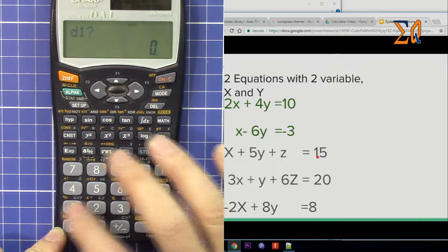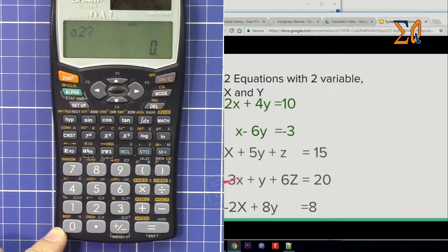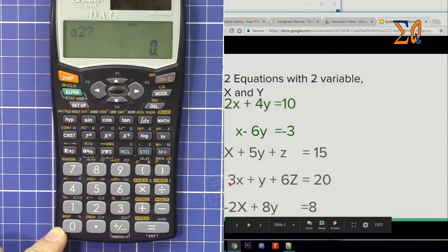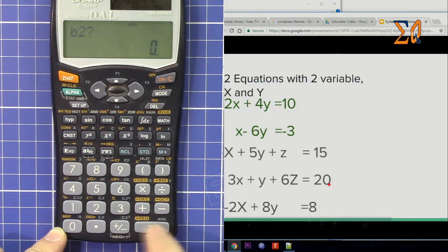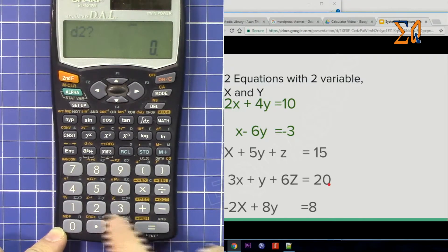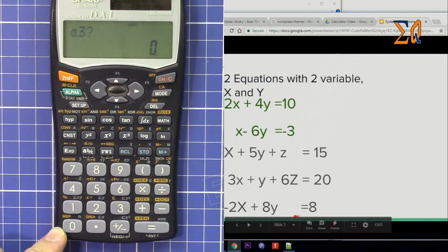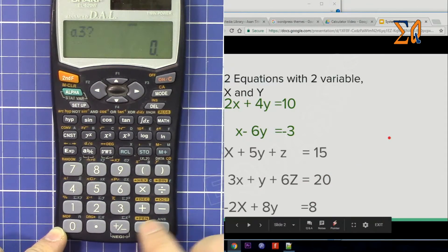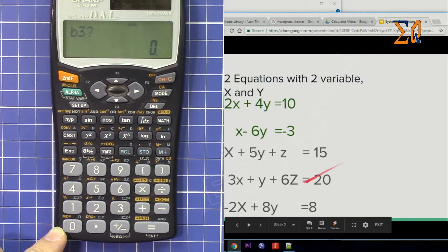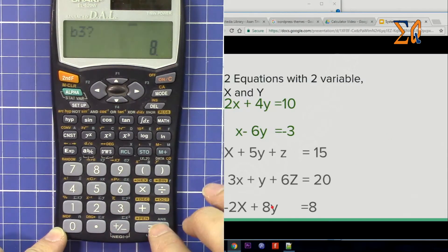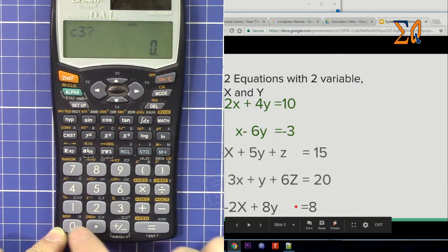Now for equation 2: 3x + y + 6z = 20. Enter 3, 1, 6, and then 20. For equation 3, the coefficient of X is -2, Y is 8, and Z we don't have, so enter 0. Then D is -8. So the third equation is -2x + 8y = -8.